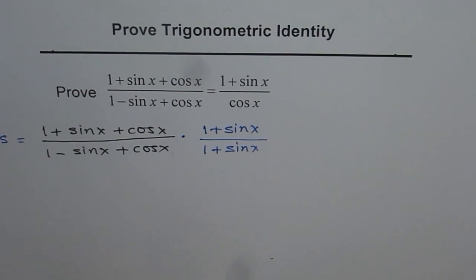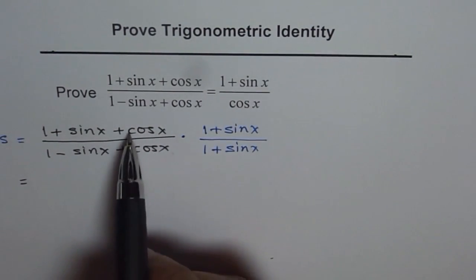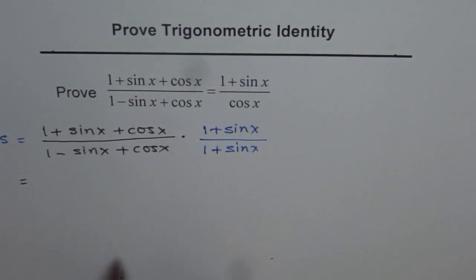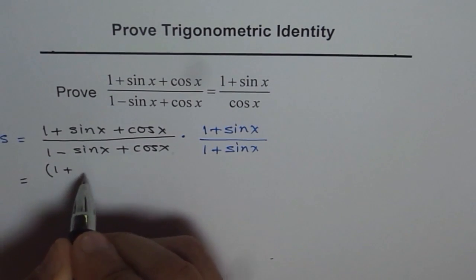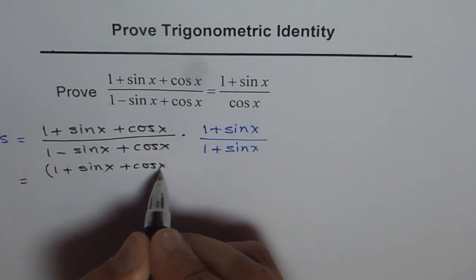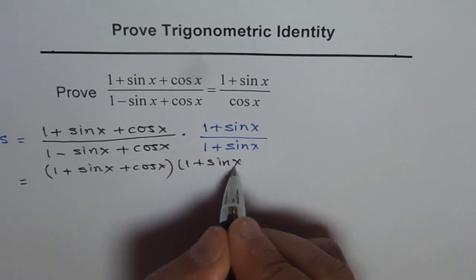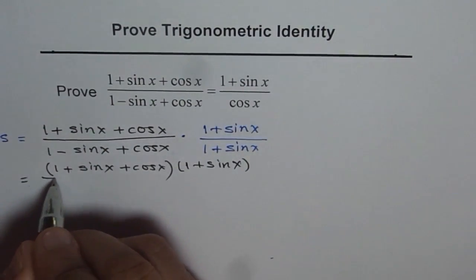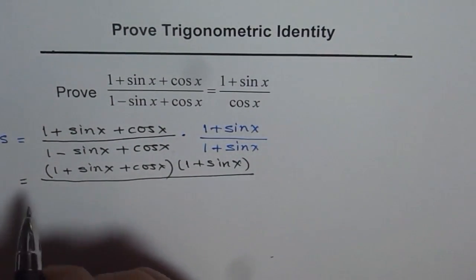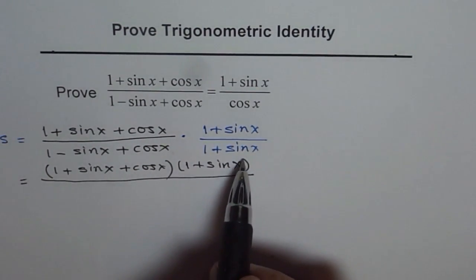Now how to solve it? Remember, we want (1 + sin x), so don't expand the numerator, just keep it as such: (1 + sin x)(1 + sin x + cos x). We need (1 + sin x), therefore we are not expanding the numerator, but expand the denominator. Multiply (1 - sin x + cos x) by (1 + sin x).